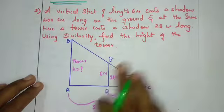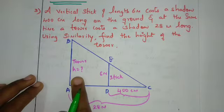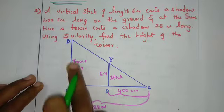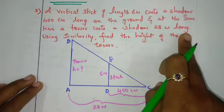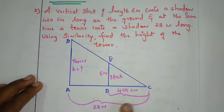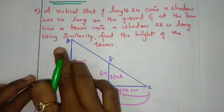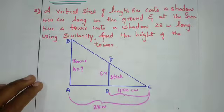At the same time, a tower casts a shadow of 28 meters long. This distance is 28 meters long. The two are at the same time. Using similarity, find the height of the tower. This tower height we need to find.